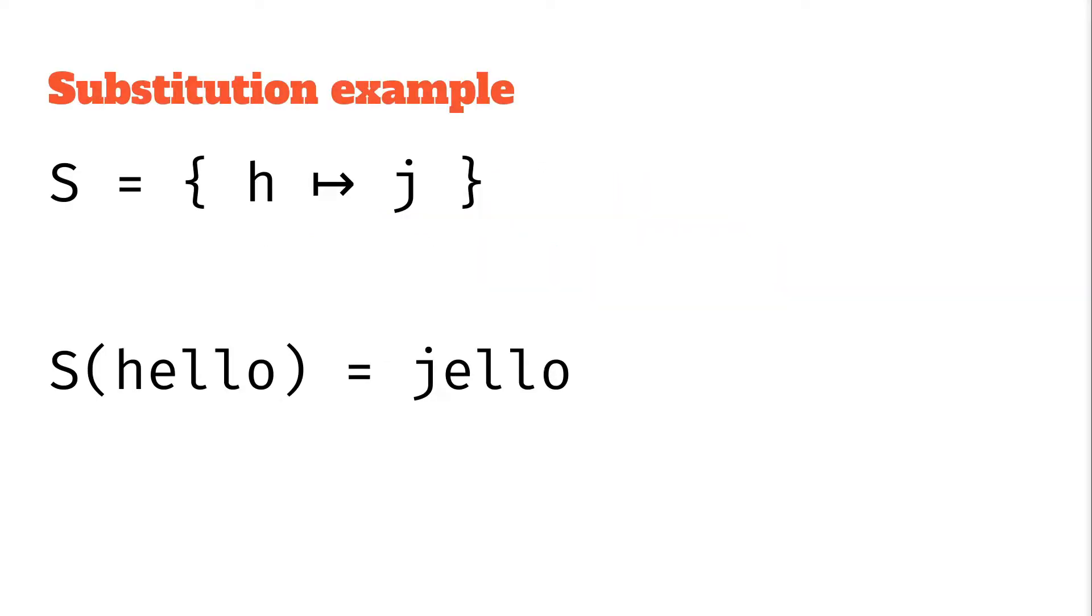In a previous video we looked at substitutions which are sets of mappings. So here we have a substitution where we've got a mapping from h to j. When we apply it on the string hello we're changing that h to a j we get jello. Go back and watch the previous video if you are at all confused about that.